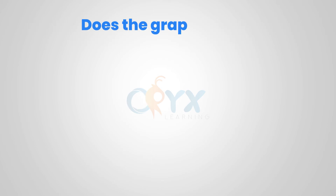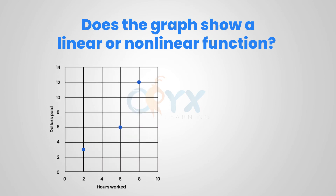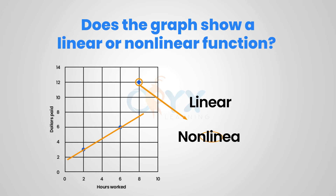Does the graph show a linear or non-linear function? In order to be a linear function, we should be able to put a straight line through all of the points. As we can see, the straight line hits two of the points but not the third. Therefore, it is a non-linear function.